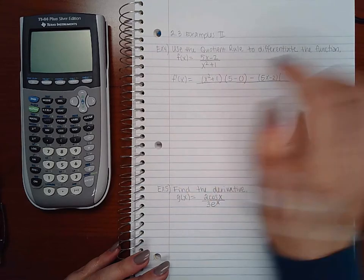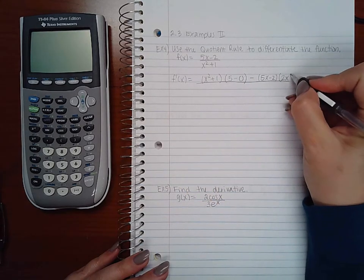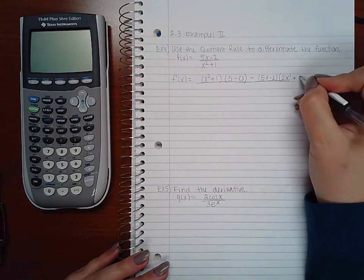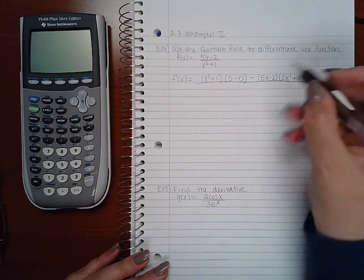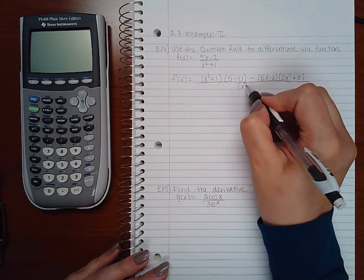Two terms. So the derivative of x squared is 2x to the 1. Plus the derivative of 1 is 0. All over low squared.